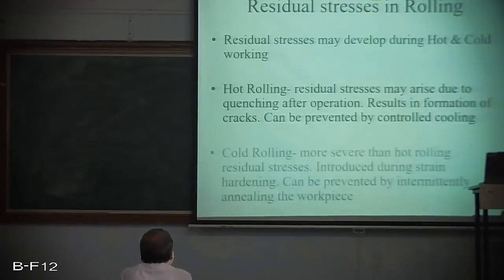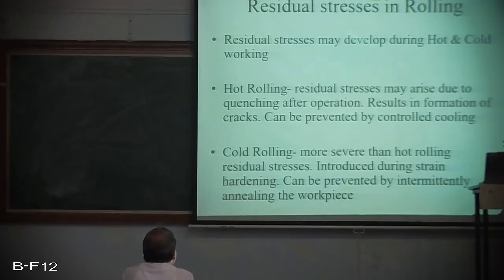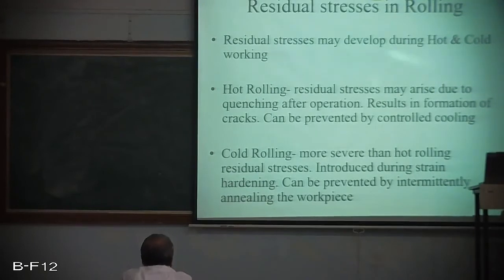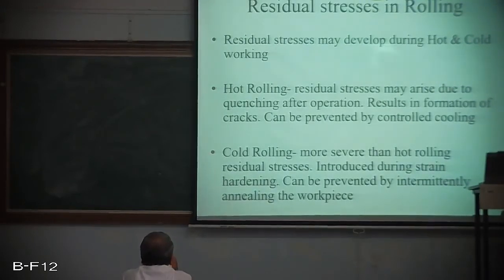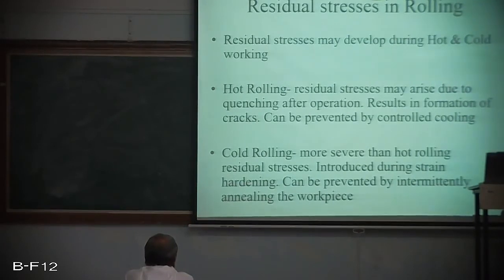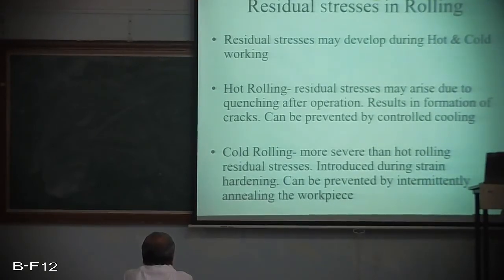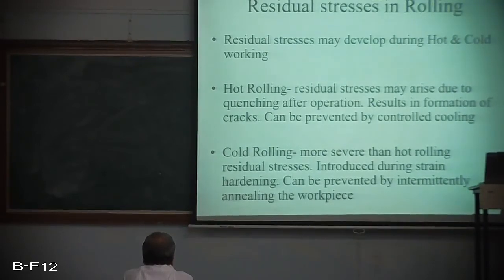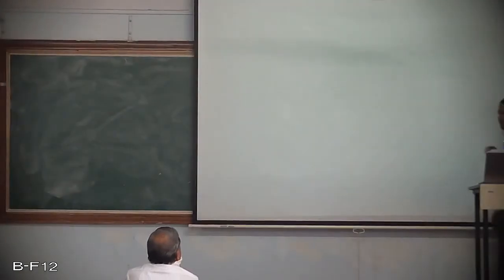Residual stresses may develop during both hot and cold working. In hot rolling, residual stresses arise due to quenching after the operation, resulting in cracks — this can be prevented by controlled cooling and annealing. In cold rolling, residual stresses are more severe than in hot rolling, introduced during strain hardening, and can be prevented by intermittently annealing the workpiece before continuing with the rolling process.